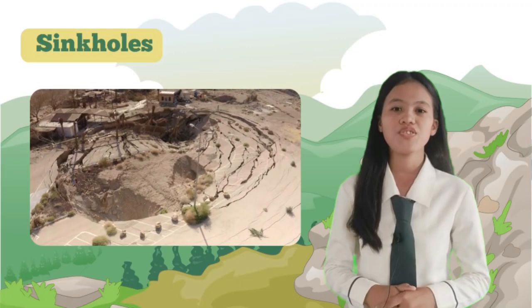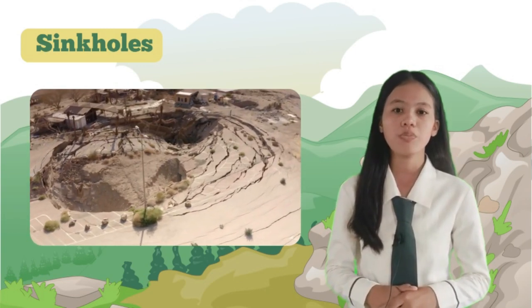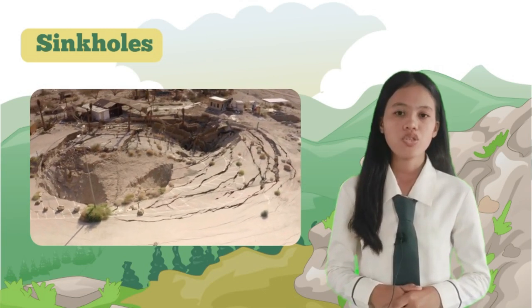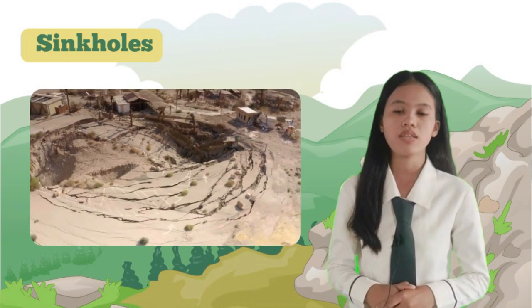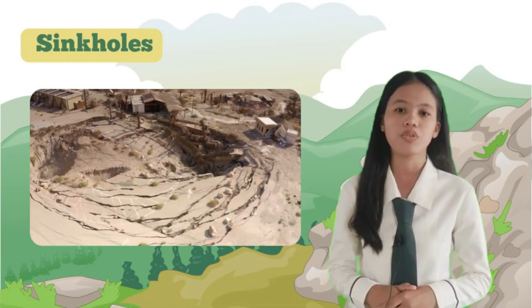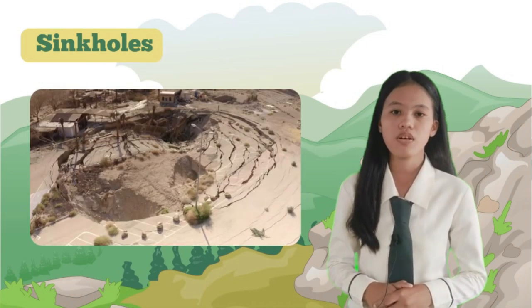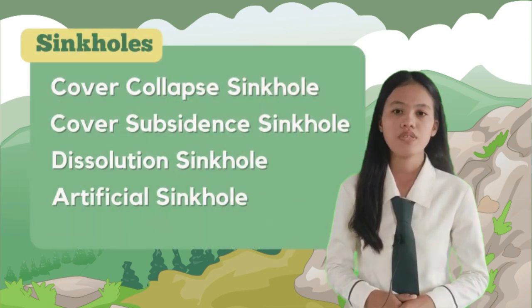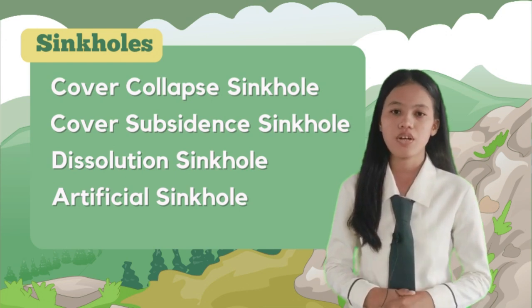Sinkholes are depressions or cavities that form on the earth's surface due to the dissolution of soluble rocks such as limestone or dolomite. The formation of sinkholes typically occurs in areas where these rocks are present and groundwater can flow through them. They can appear suddenly, swallowing up buildings, roads, or even entire landscapes. We will now explore four main types of sinkholes: cover collapse, cover subsidence, dissolution, and artificial sinkholes.